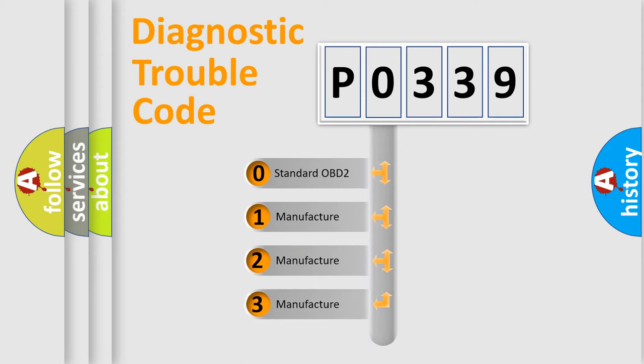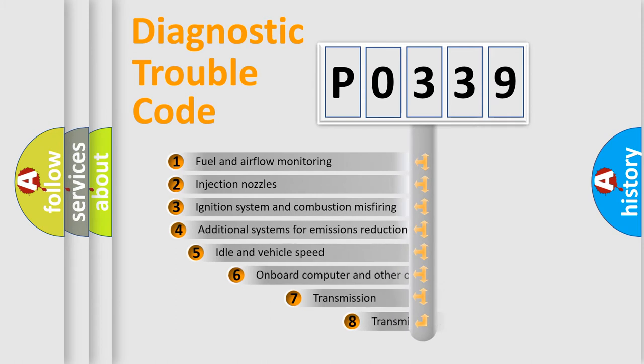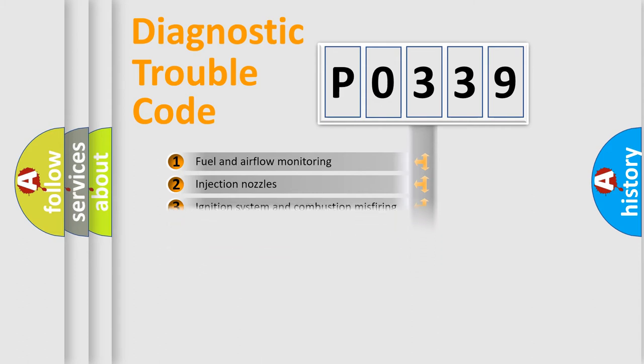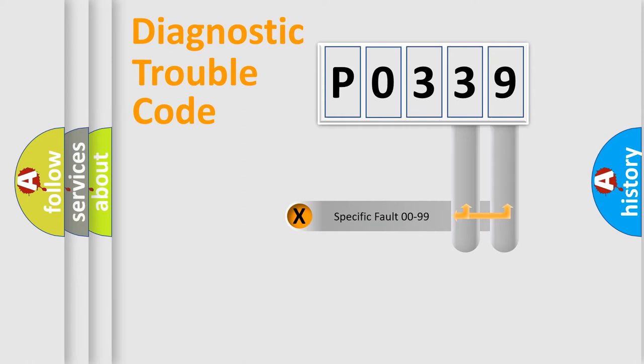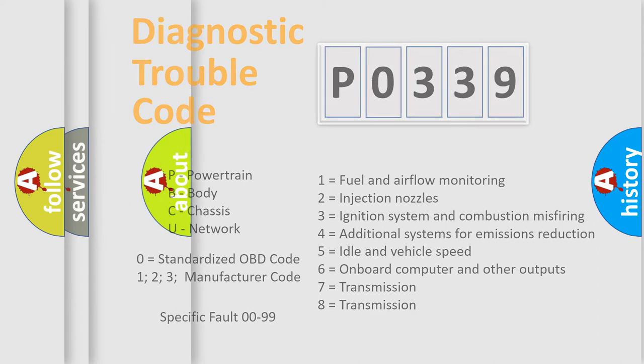If the second character is expressed as zero, it is a standardized error. In the case of numbers 1, 2, or 3, it is a manufacturer-specific error. The third character specifies a subset of errors. The distribution shown is valid only for the standardized DTC code. Only the last two characters define the specific fault of the group. Let's not forget that such a division is valid only if the other character code is expressed by the number zero.